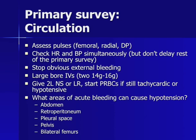Two liters of normal saline or lactated Ringer's should be started, and if the patient is still tachycardic or hypotensive, packed red blood cells should be transfused. Among blunt trauma patients, only a few areas of the body can bleed enough to cause hypotension: the intraperitoneal space, retroperitoneal space, the pleural space, the pelvis, and fractures of both femurs.